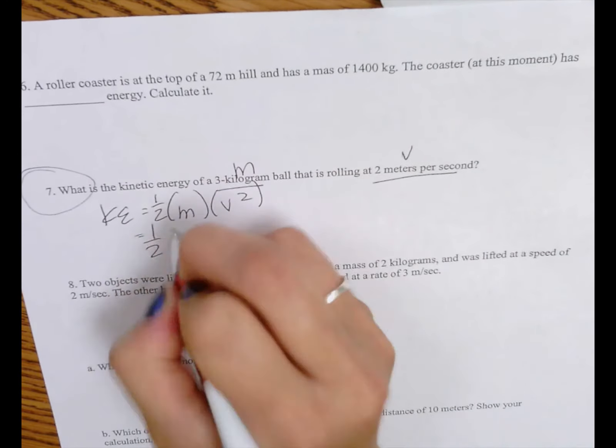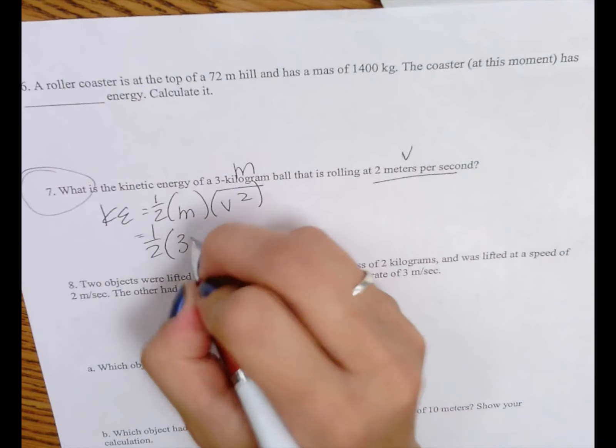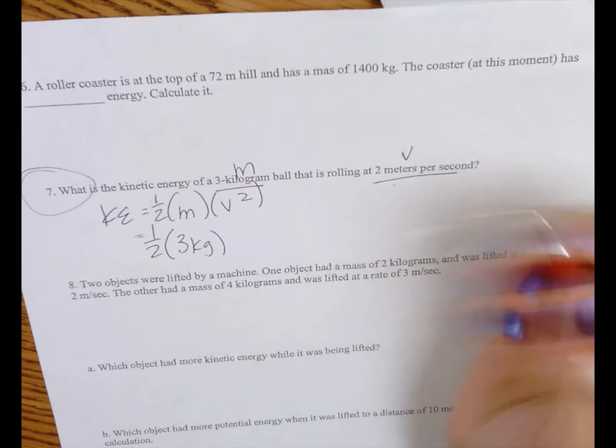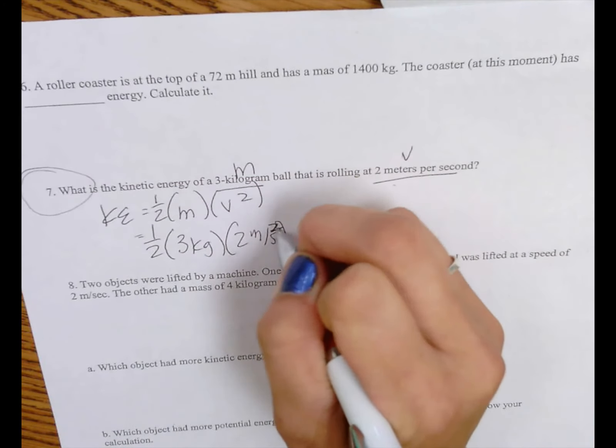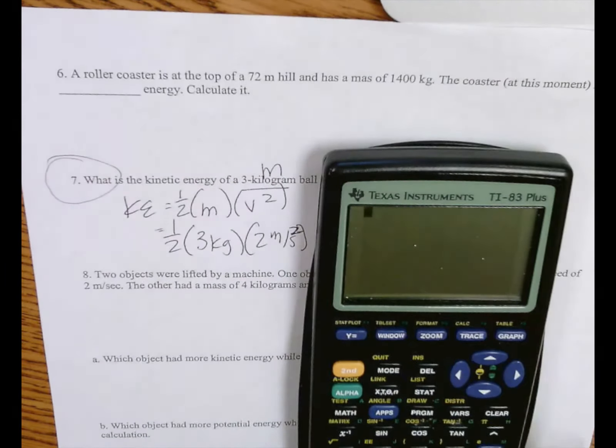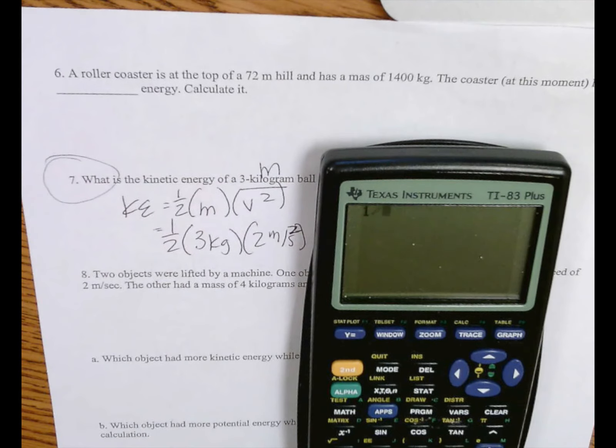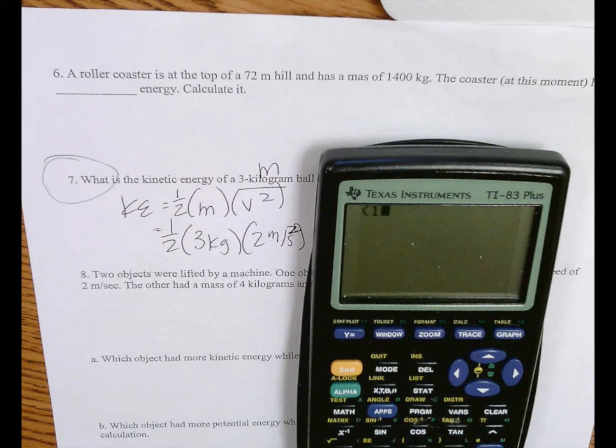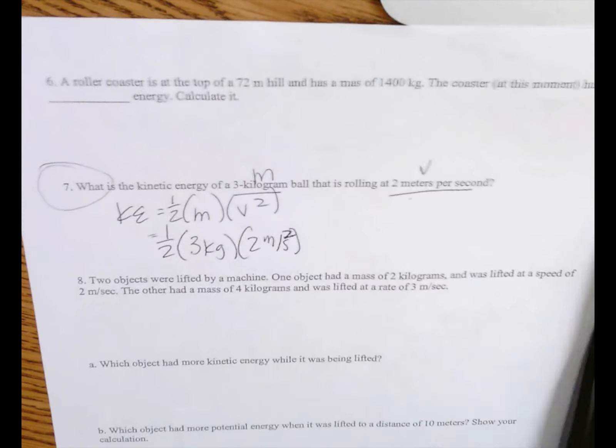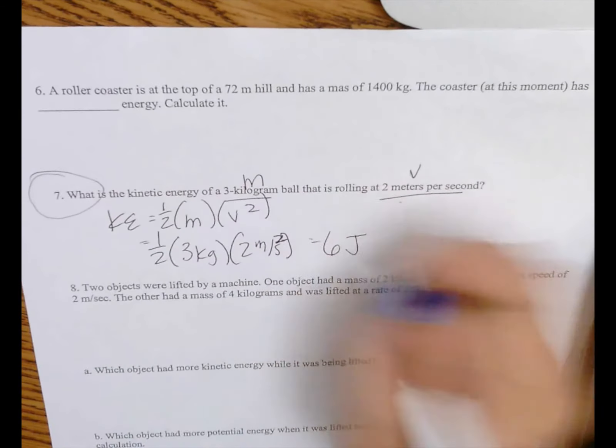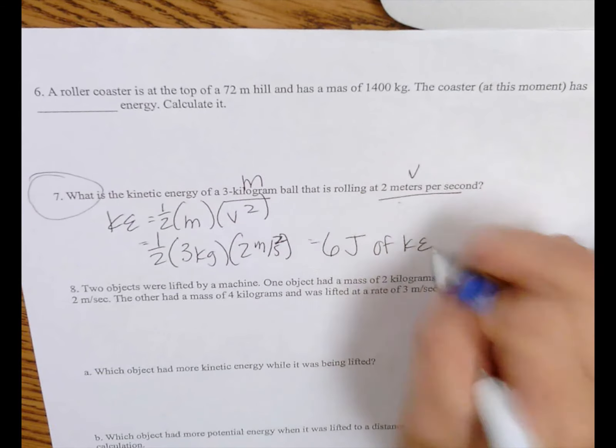So all you're going to do is 1 half times the mass, which is 3 kilograms, times velocity, which is 2 meters per second. But we need to square that problem. So you take 1 half times 3 times 2 squared. And you will get a total of 6 joules of kinetic energy.